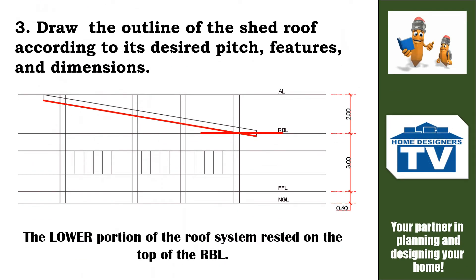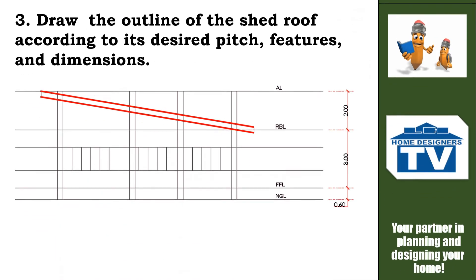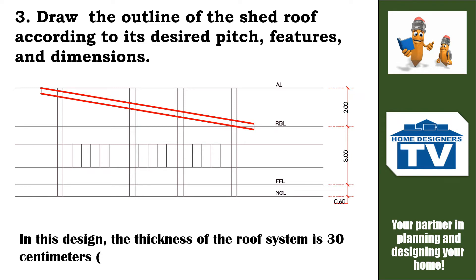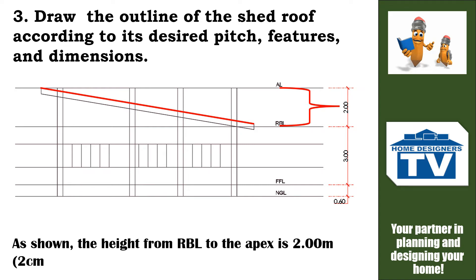For Step 3, draw the outline of the shed roof according to its desired pitch, features, and dimensions. The lower portion of the roof system rests on the top of the RBL. In this design, the thickness of the roof system is 30 centimeters, or 3 millimeters in a drawing using scale 1 to 100. As shown, the height from RBL to the apex is 2 meters, or 2 centimeters in a drawing using scale 1 to 100.